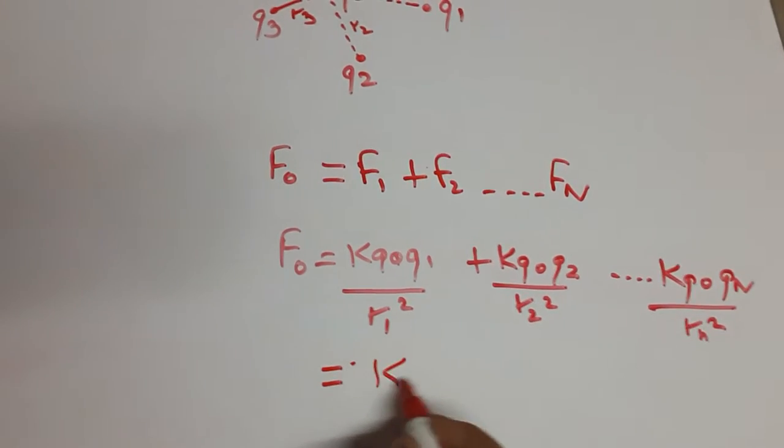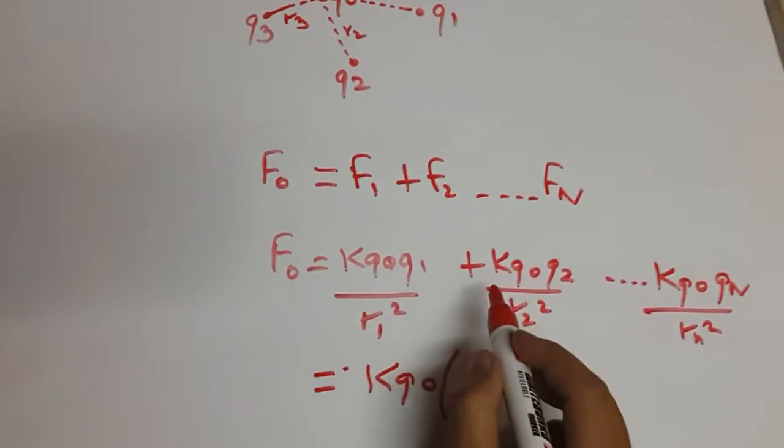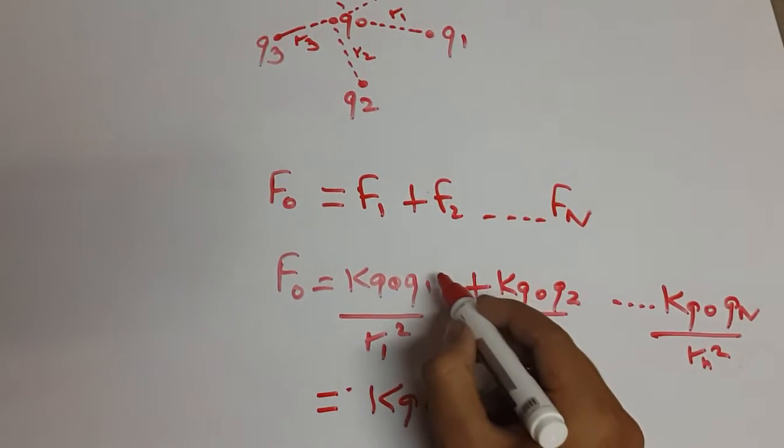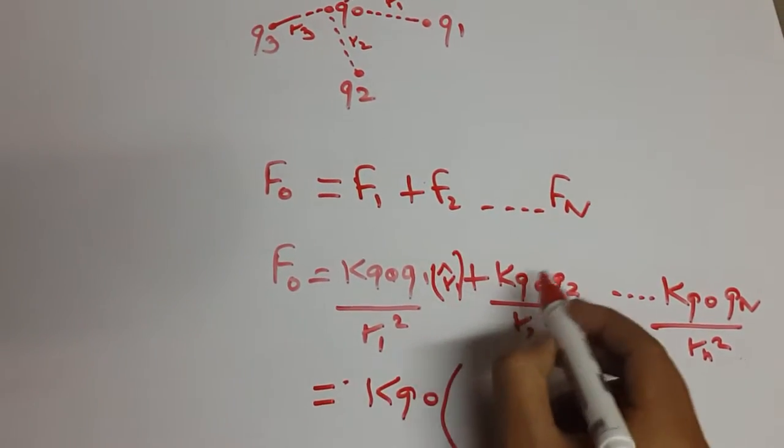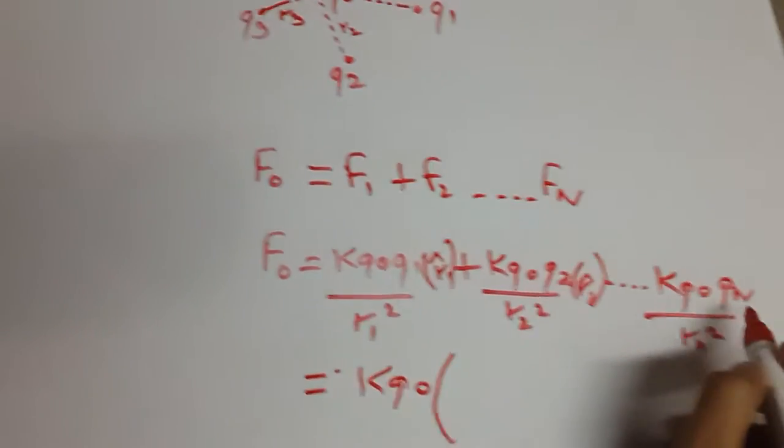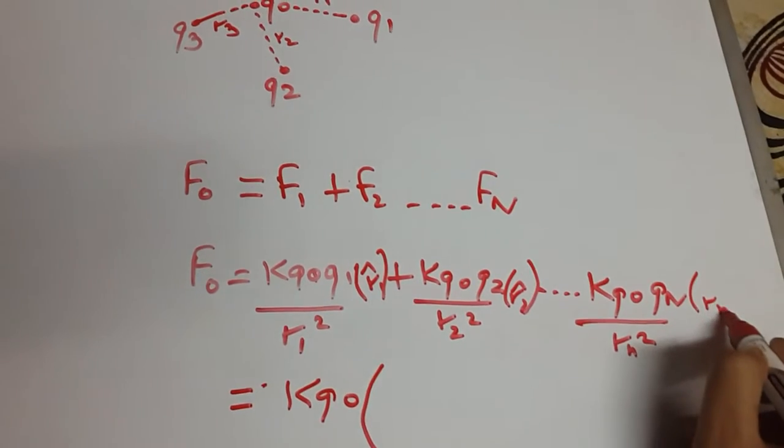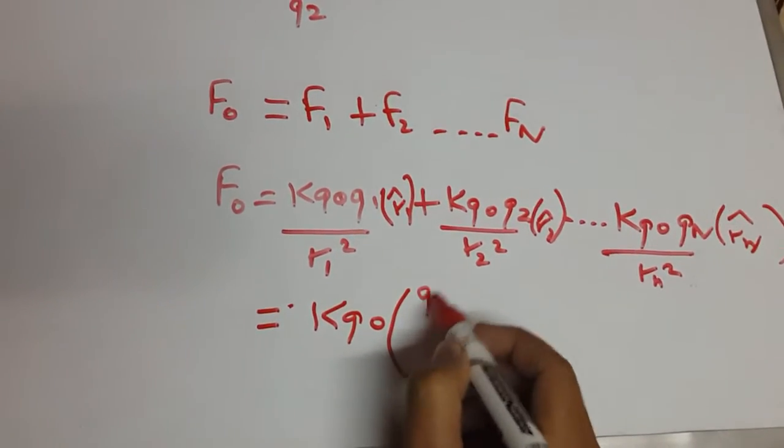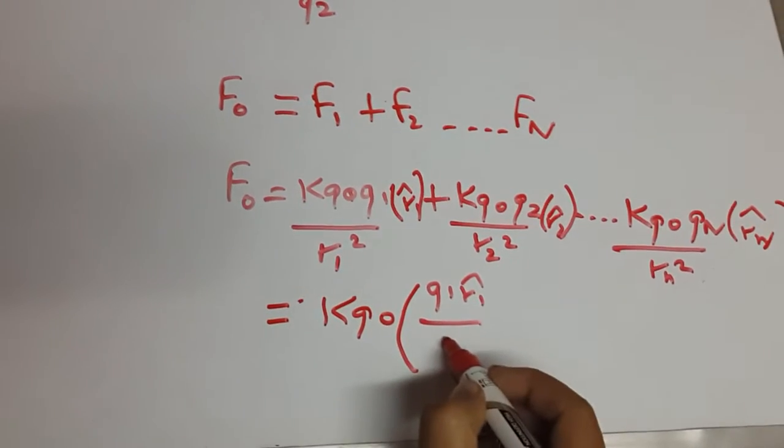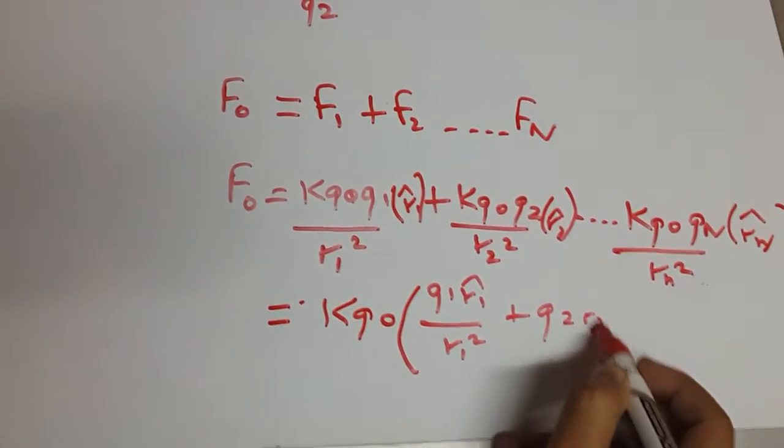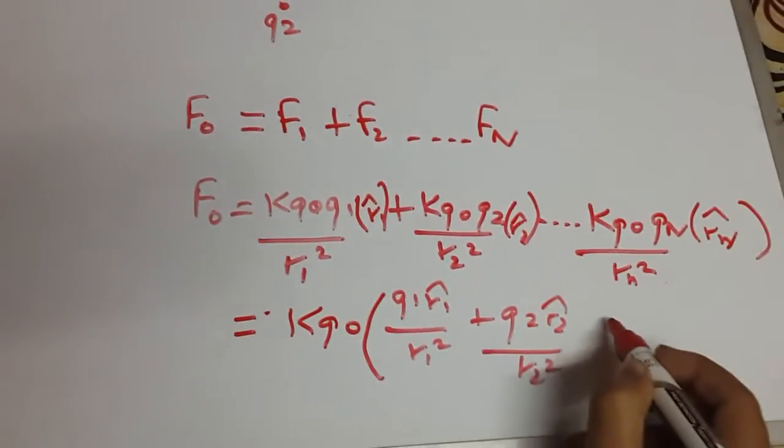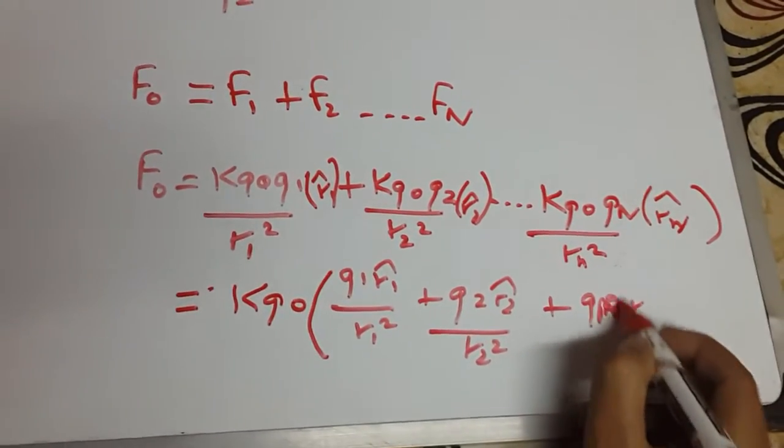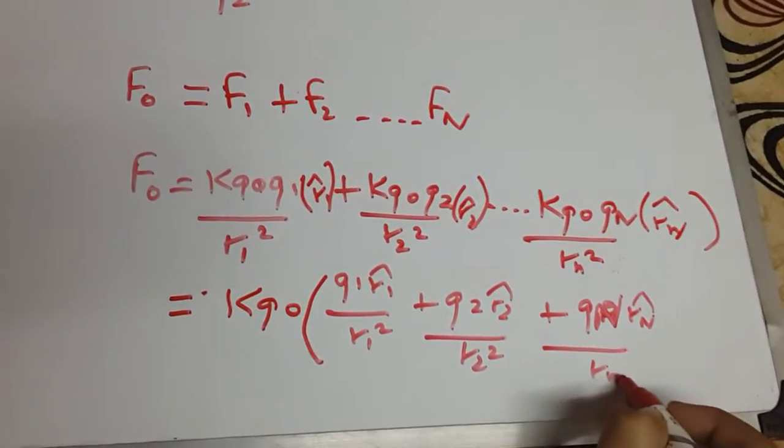k q0, we have to take this in the vector form. Because each charge is having different direction so we will take r cap here, r1 cap, r2 cap till rn cap. So what's left is q1 r1 cap upon r1 square plus q2 r2 cap upon r2 square till qn rn cap upon rn square.